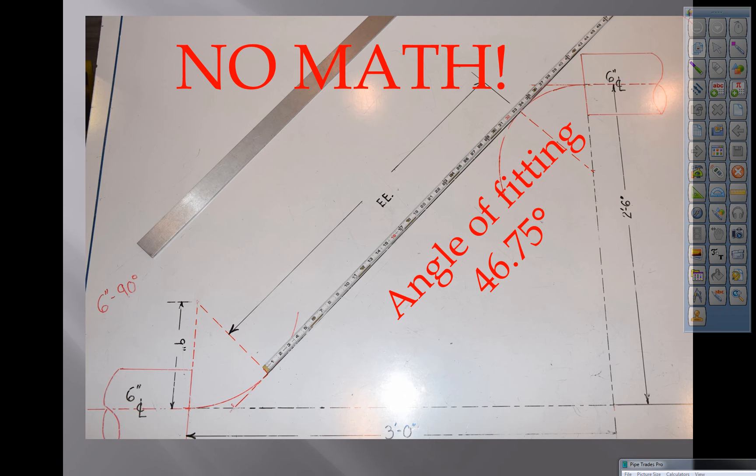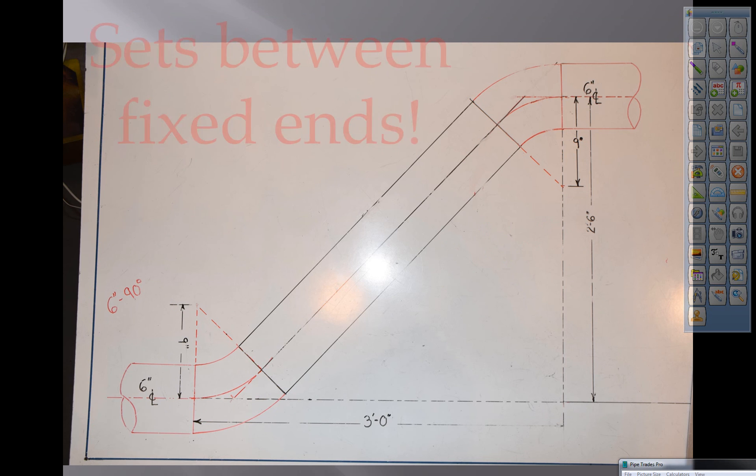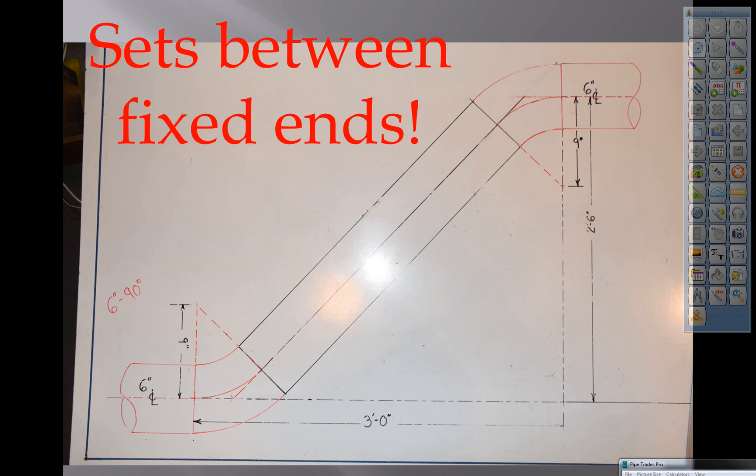46.75 on the fitting. 3 and 7 eighths for the takeoff. We read the rule. We take off an eighth inch gap. And we have 2 foot 9 and 3 sixteenths. So there you have it. It sets between fixed ends. And you're ready to go.